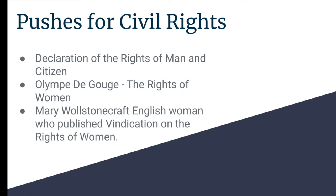There were also figures that pushed for the equality of women. Olympe de Gouges wrote the Rights of Women in 1791 and basically advocated for the same provisions as the Declaration of Rights of Man and Citizen. Additionally, English woman Mary Wollstonecraft published A Vindication of the Rights of Women in 1792, and her ideas were similar to de Gouges's, which just shows the growing women's awareness of a push for equal rights.